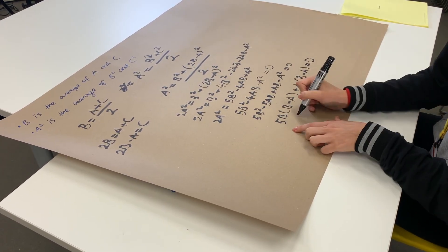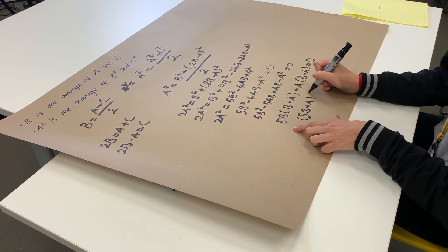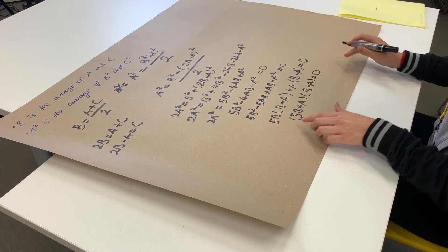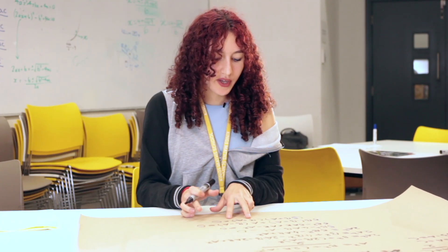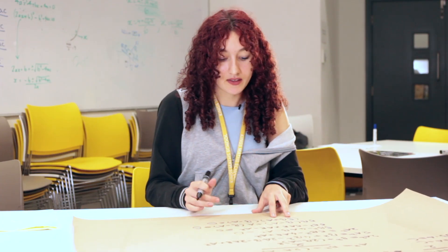So now we have it nice and factorised. We can say 5B plus A times B minus A is equal to zero. Well, for this to equal to zero, one of the factors have to be zero. So either this bracket is equal to zero or that bracket is equal to zero.